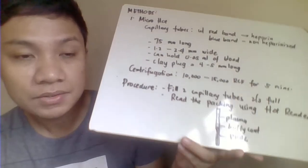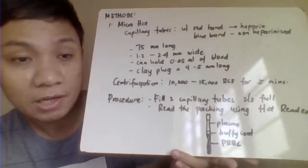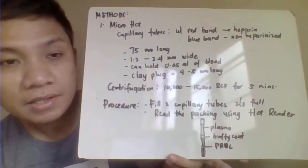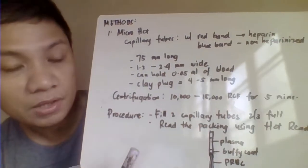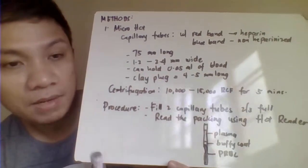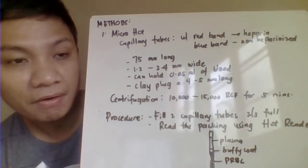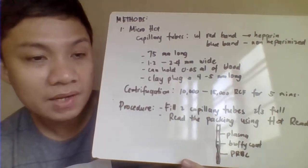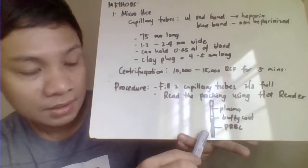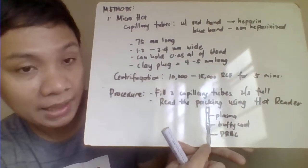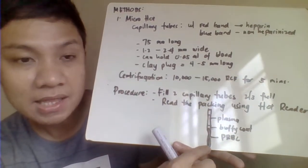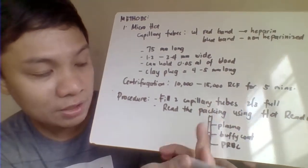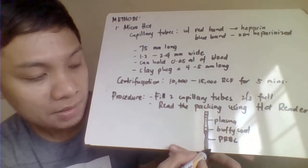When sealing the capillary tube, seal the end opposite to where the band or mark is located, so the mark remains visible. This helps you identify which type of capillary tube was used. Fill the tube to approximately two-thirds full — not completely full — to prevent overflow when sealing. You can seal with clay or wax.